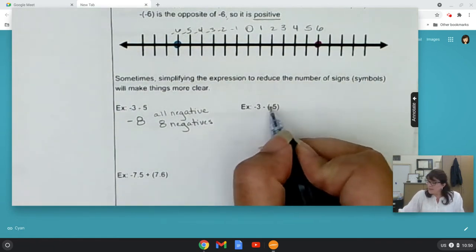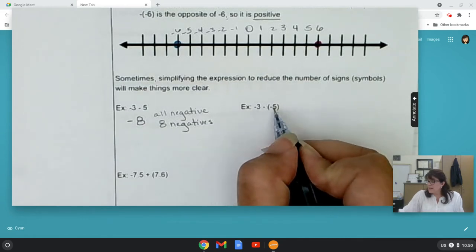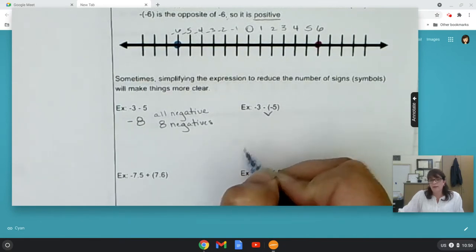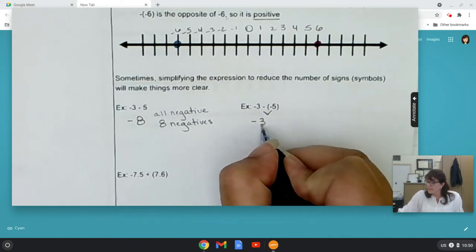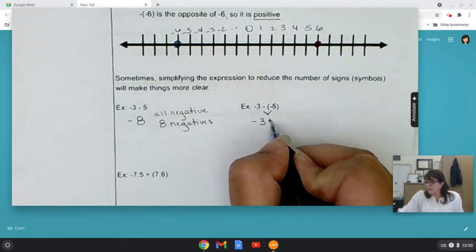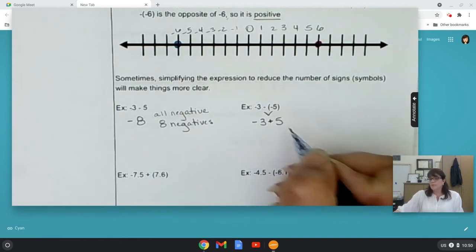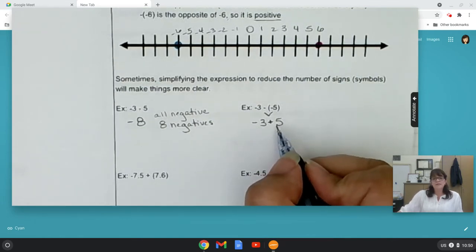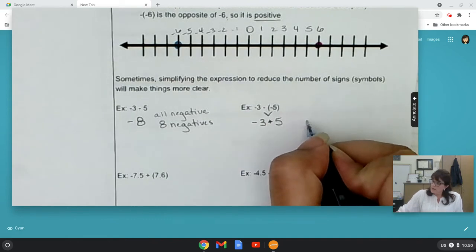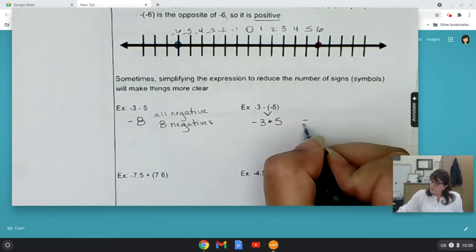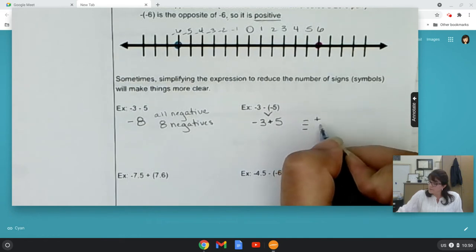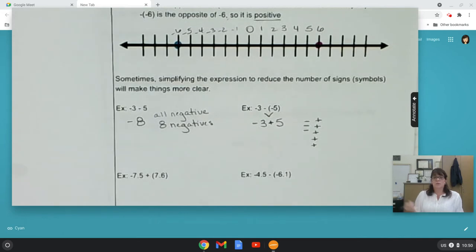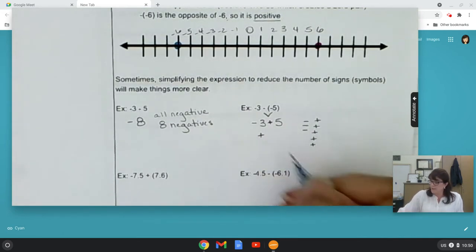Now, watch when we have a double negative. Negative of a negative is really a positive. So, what if we rewrote it this way? Negative three. Negative of a negative is positive. Well, now we have a negative three and a positive five. Three negatives. Five positives. Well, we definitely have more positives, so we know our answer is going to be positive.